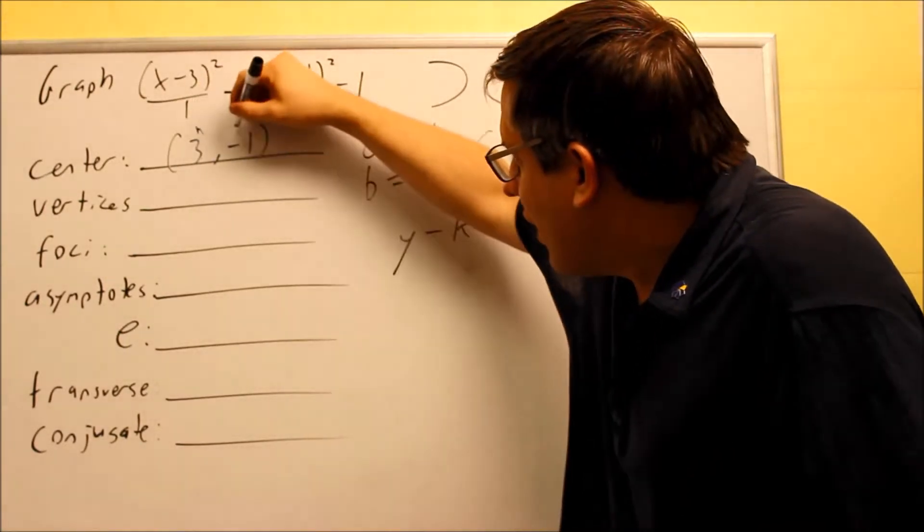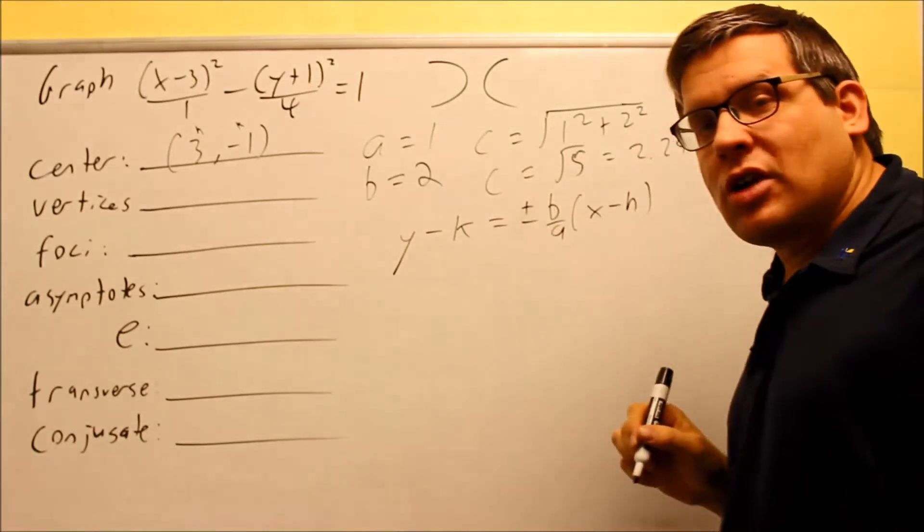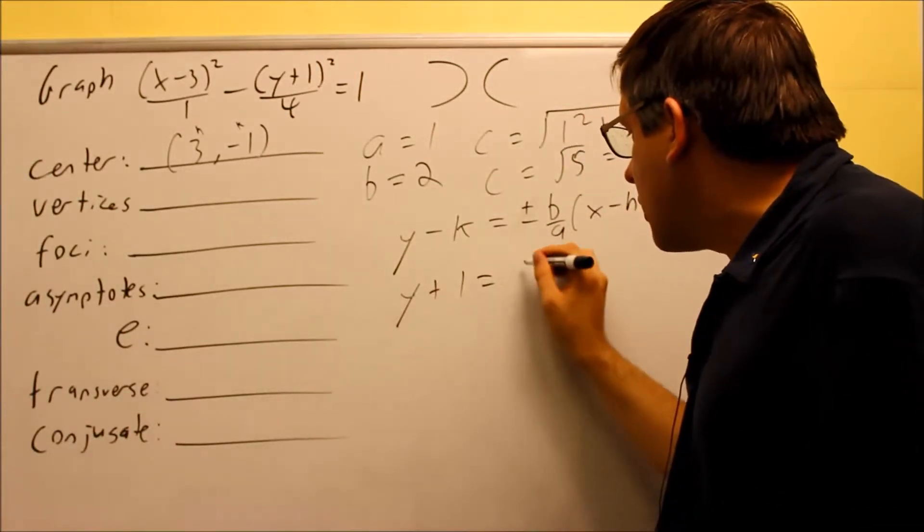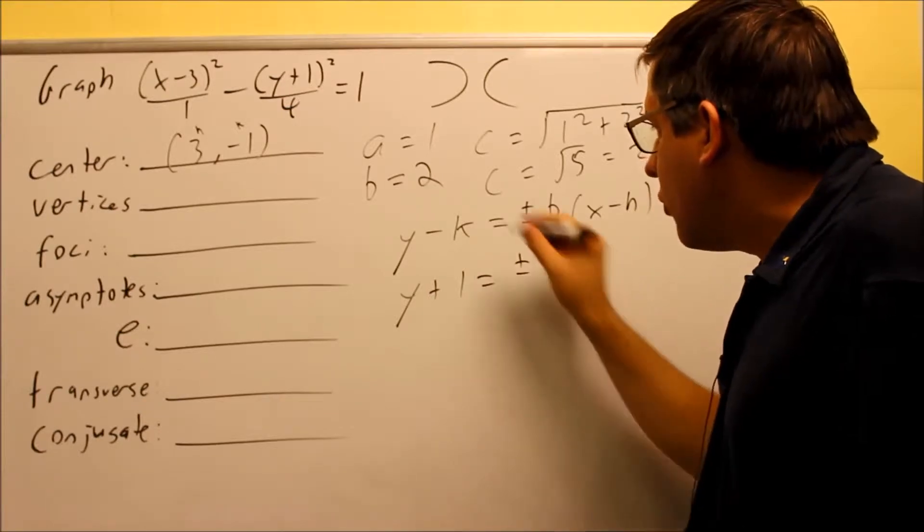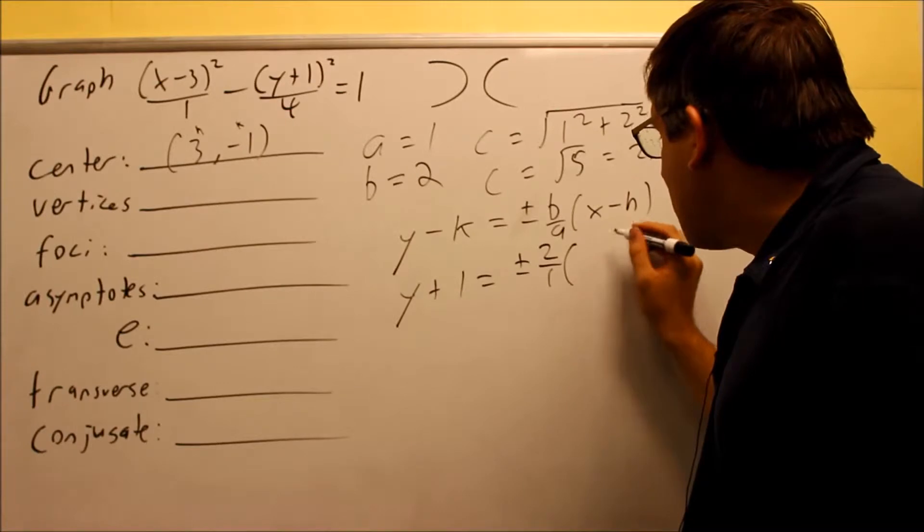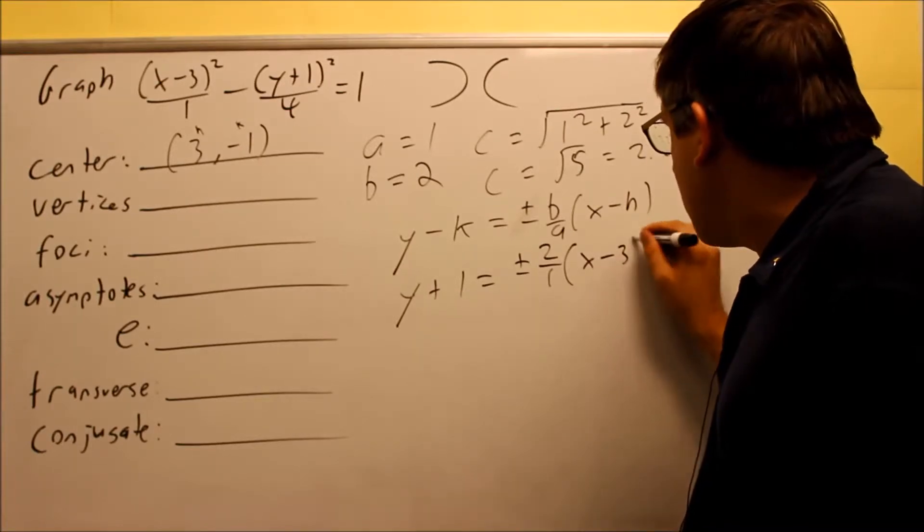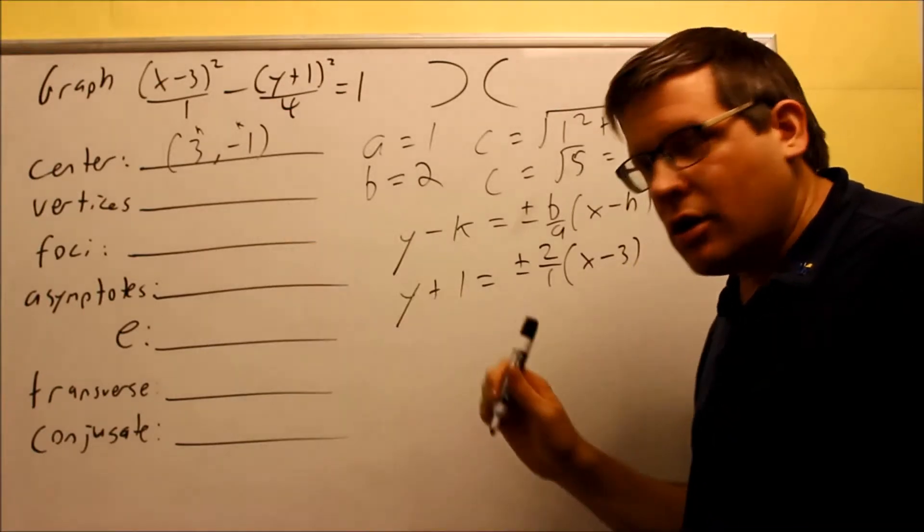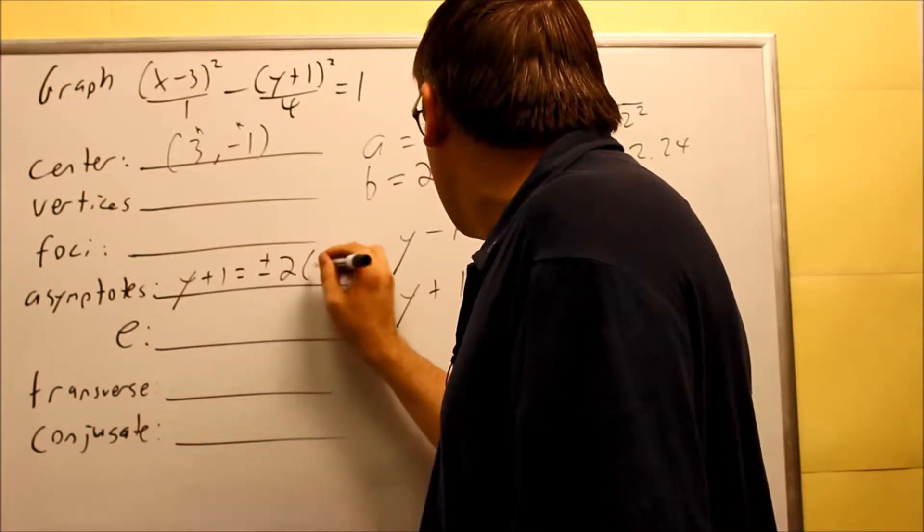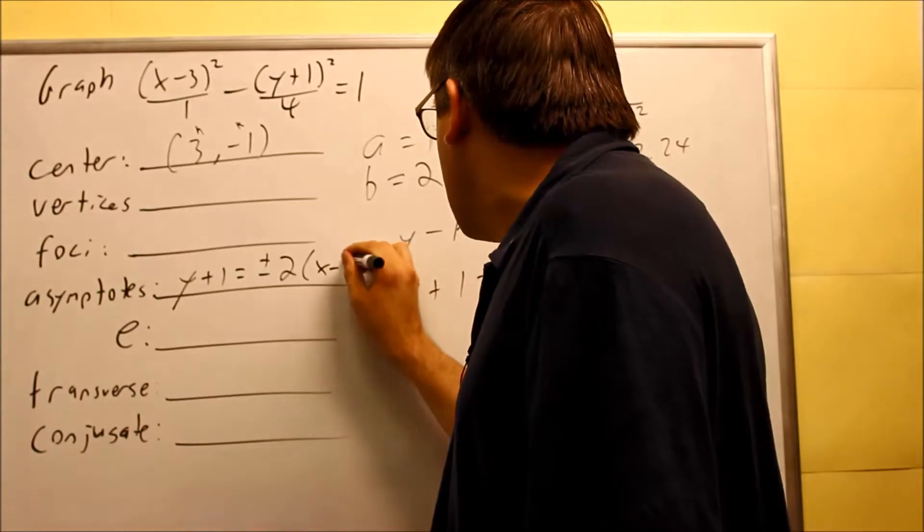Okay, we're going to go ahead and put in our H, K. We already have H and K here from our center that we did earlier. So I have Y minus negative 1. That's Y plus 1 is going to equal plus or minus B over A. We have that already, 2 over 1, and then X minus H. That's going to be X minus 3. So when I put this in here, then I have Y plus 1 equals plus or minus 2 times X minus 3.